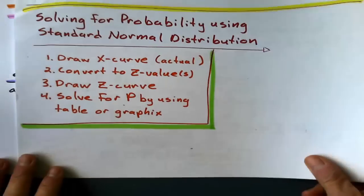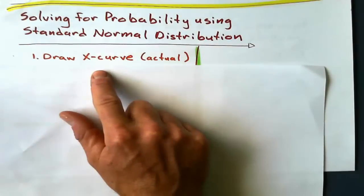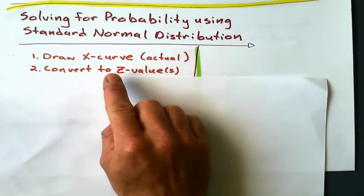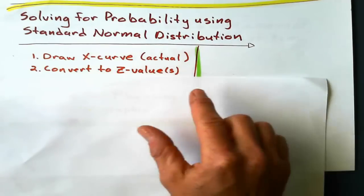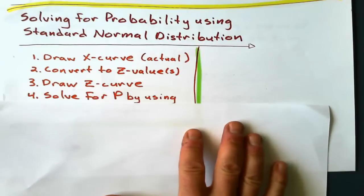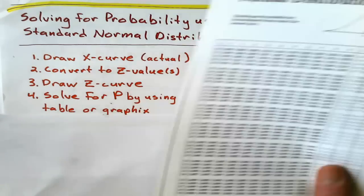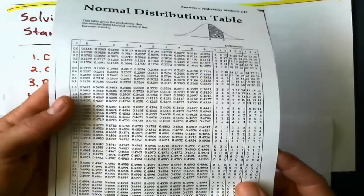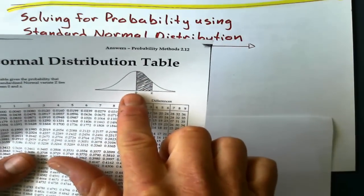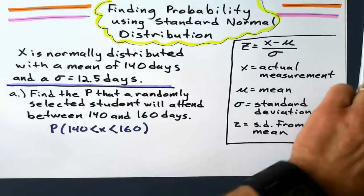Now, we have steps to solve these problems, and here they are. We can skip some of these steps, but here's the whole picture. First up, we're going to draw what the X curve is, the actual curve, with the actual mean and the actual measurements. Then we're going to convert that to a Z value, or values. There might be more than one. We'll draw the Z curve, which will look the same. And we'll solve by probability using the table. Probabilities are in the middle, and the Z values are at the top.